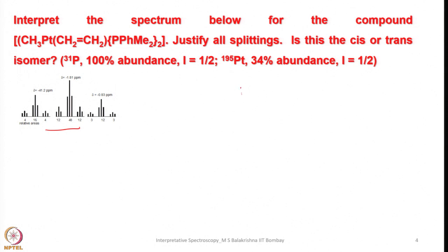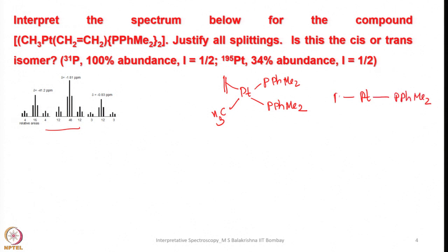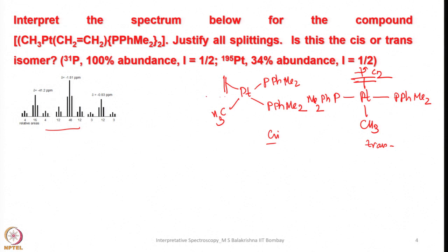Let me first write this one. So platinum with the PPh(Me)₂ groups and ethylene — there are two possible isomers. If you consider the trans isomer, in this case both the phosphorus environments are identical because one can perform a C₂ axis of rotation along the ethylene–platinum axis. Whereas for the cis isomer, we cannot perform a C₂ rotation in any direction to make the two phosphorus sites equivalent.